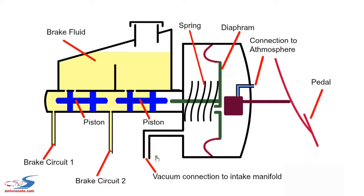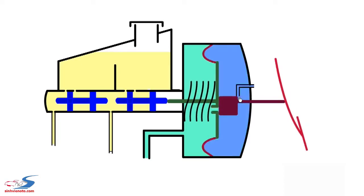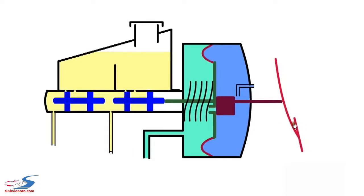When the car is started, there is vacuum on both sides of the diaphragm. When the pedal is pressed, it first closes the valve to the vacuum side and then opens the valve to atmosphere. Now, there is a pressure differential across the diaphragm. Vacuum on one side, atmospheric pressure on the other, which assists with application of the brakes.